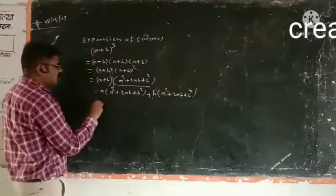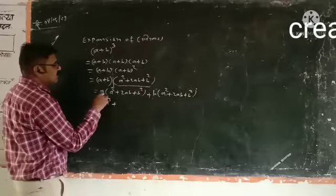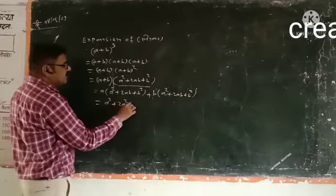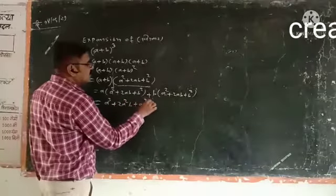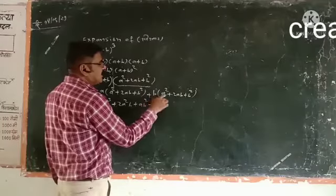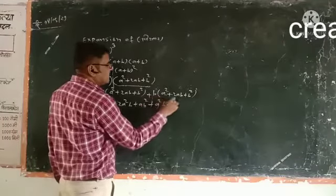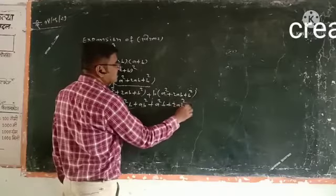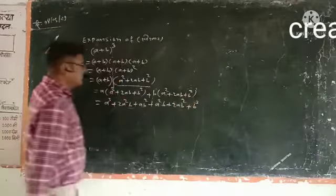A cubed plus 2A squared B plus AB squared, and then A squared B, 2AB squared plus B cubed.